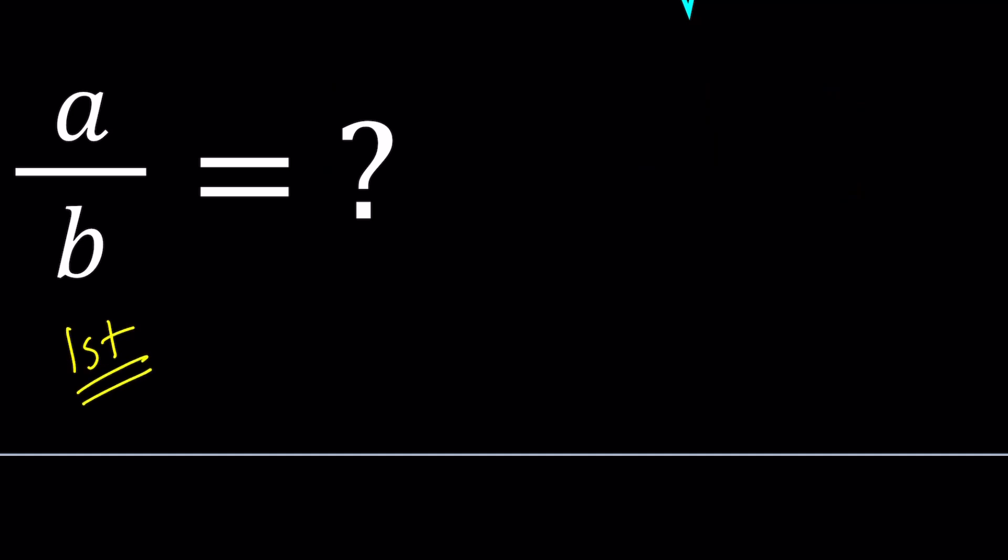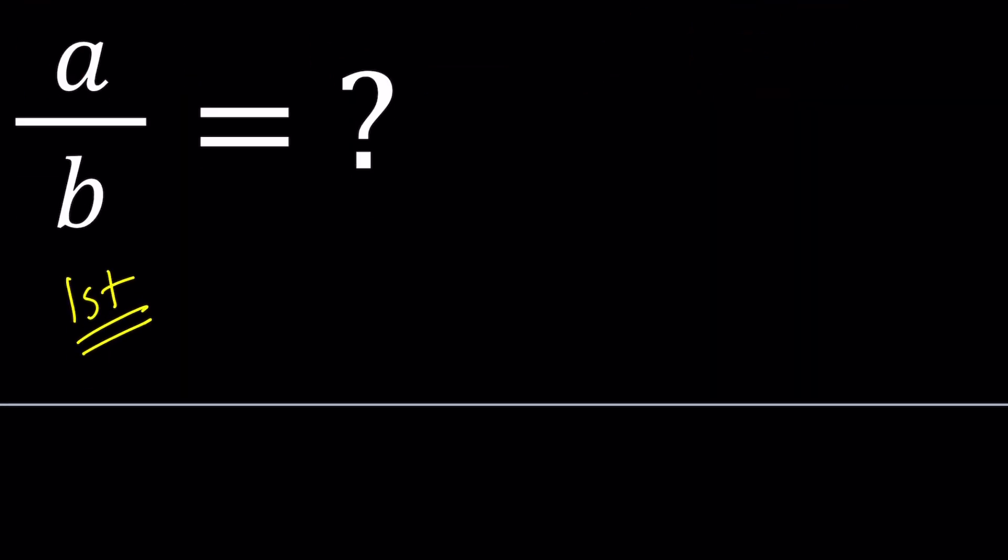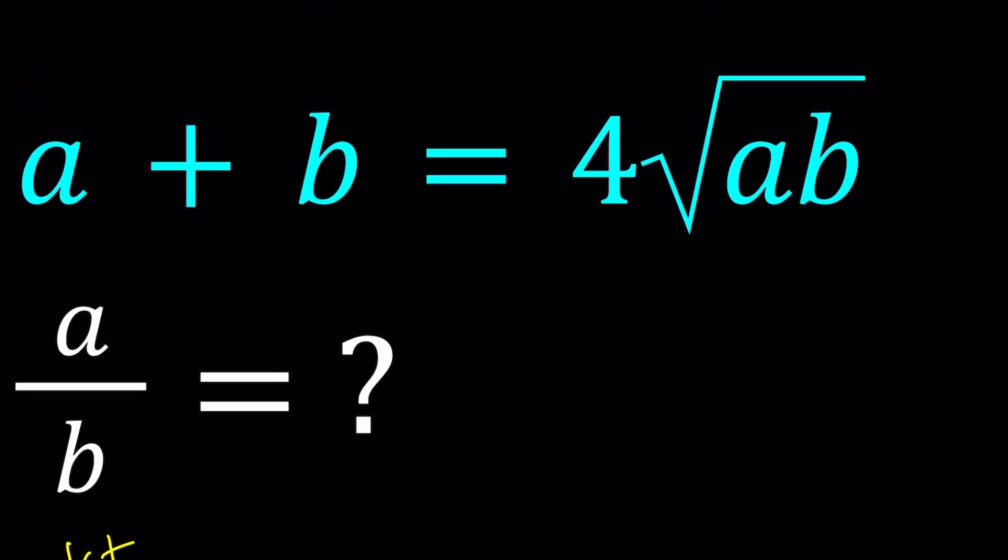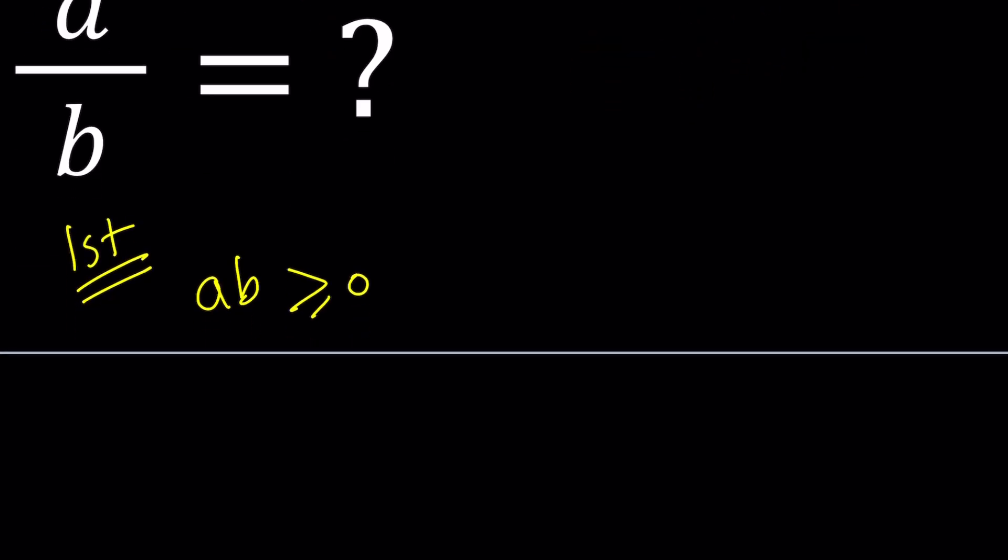For the first method, first of all, I want you to consider, since AB is under the radical, that needs to be greater than or equal to 0. But notice that if A is 0, then B has to be 0, but that's not possible, therefore A and B must be different from 0. So, A does not equal 0, B does not equal 0, and this implies AB is always positive. So AB must be positive. Let's keep that in mind.